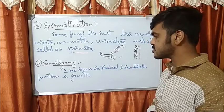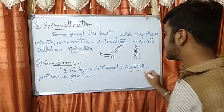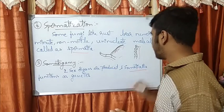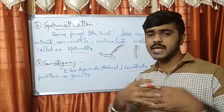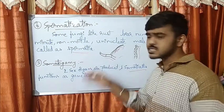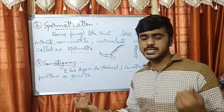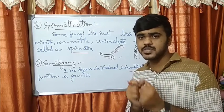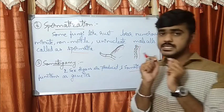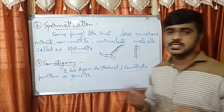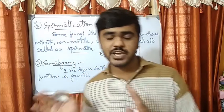The last method is somatogamy. Here, two sex organs are absent — instead, the somatic cells function as gametes. The somatic cells join through anastomosis, forming a network by joining other cells toward them. The somatic cells function as the gametes in this method.